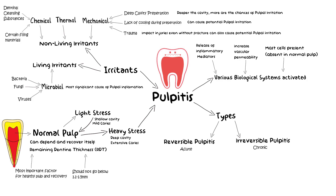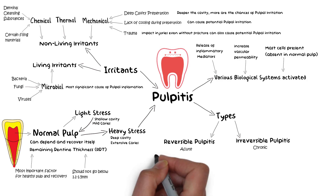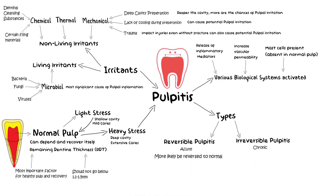Reversible pulpitis, by definition, can more likely be reversed if the cause is removed — meaning the pulp can revert back to its original state once the cause of inflammation, for example a caries lesion, is removed. A pulp with irreversible pulpitis, however, cannot revert back to its original state even if the cause is removed. Without proper treatment, a pulp that is irreversibly inflamed will most likely eventually undergo necrosis, even if the cause is removed. Hence, a tooth undergoing irreversible pulpitis requires a different treatment.